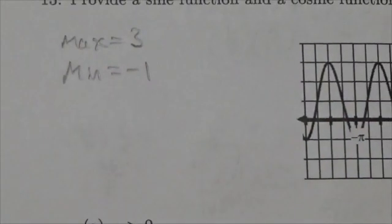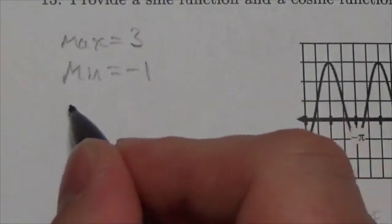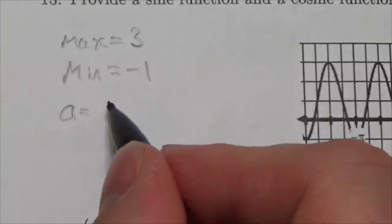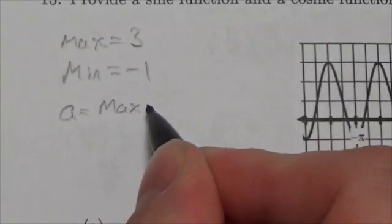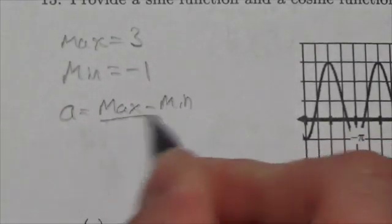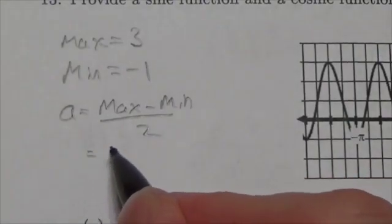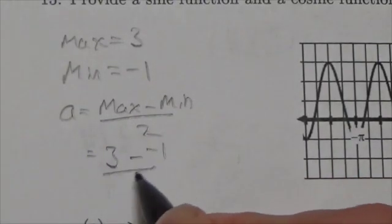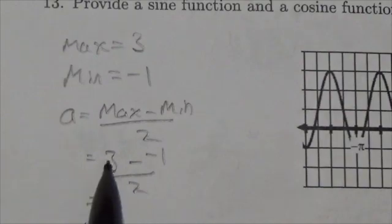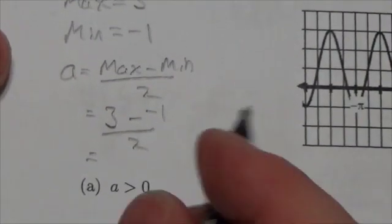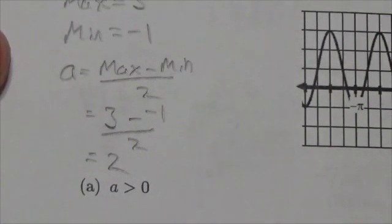Now, once I've done that, I've actually got half of the information that I need, because a, or the amplitude here, is going to be the max minus the min over two. So this is going to be three minus negative one over two. Well, three minus negative one is four over two is two.